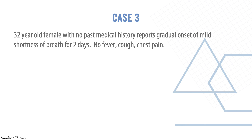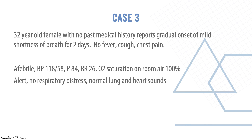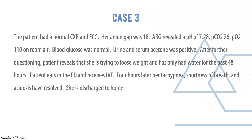Case three: the 32-year-old female had a normal chest X-ray and ECG. Anion gap was 18, blood gases revealed pH 7.28, PCO2 26, oxygen 110. Urine and serum acetone were positive. Further questioning revealed she had been trying to lose weight, drinking only water for 48 hours. Given IV fluids in the ED, her tachypnea, shortness of breath, and acidosis resolved. The diagnosis was starvation ketoacidosis.